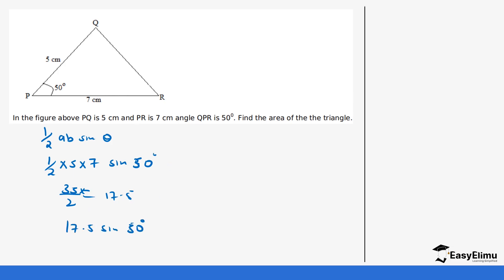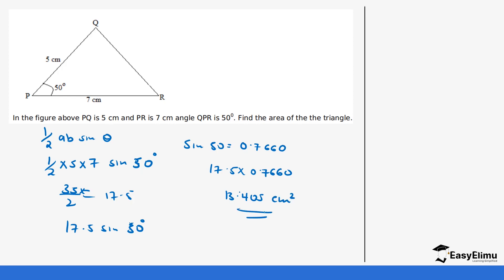You can use logarithm to calculate this question as we did in the previous video, or you can check sine 50 in the mathematical tables. When you go to the mathematical tables and check sine 50, you get 0.7660. So you calculate 17.5 times 0.7660, which gives you 13.405. So this is the area and it's centimeters squared. Ensure that you write the final answer in the correct unit.